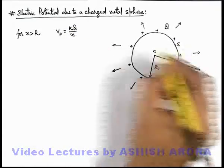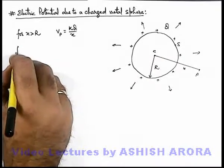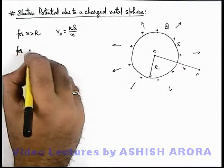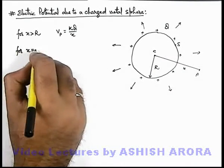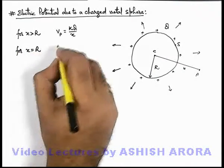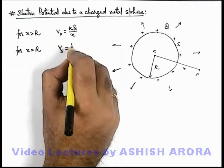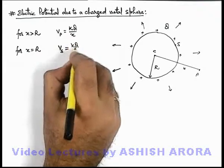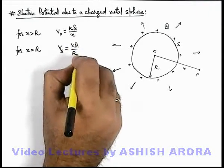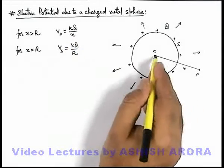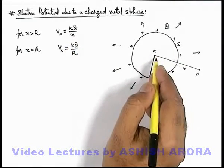Similarly, if we talk about a surface point, then for x equal to r, we can write the potential at the surface will be kq/r, because we just substitute x equal to r.